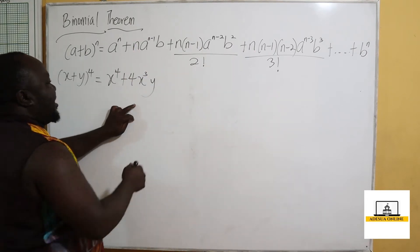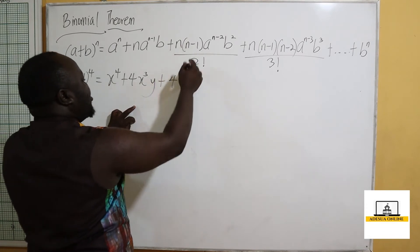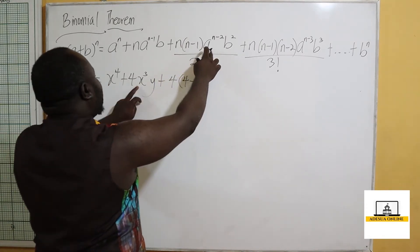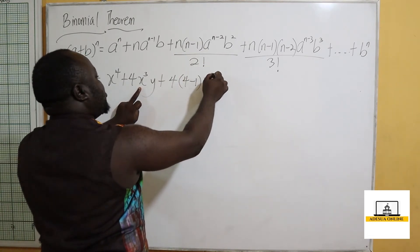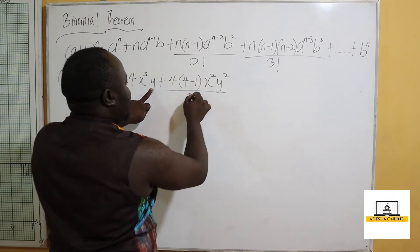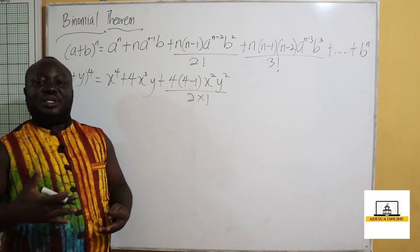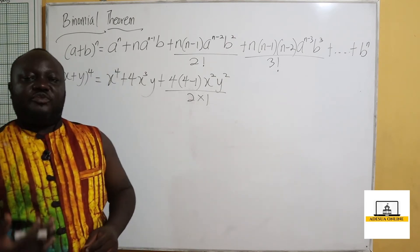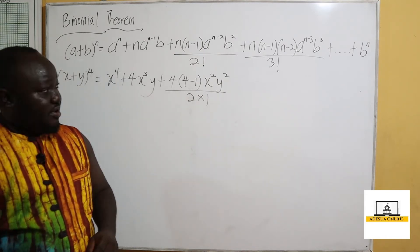So this becomes 4x cubed. Plus, we have 4 times 4 minus 1, then x raised to the power 2, and y raised to the power 2, divided by 2 times 1. Now when we say 2 factorial it means 2 times 1; 3 factorial means 3 times 2 times 1; 4 factorial means 4 times 3 times 2 times 1.